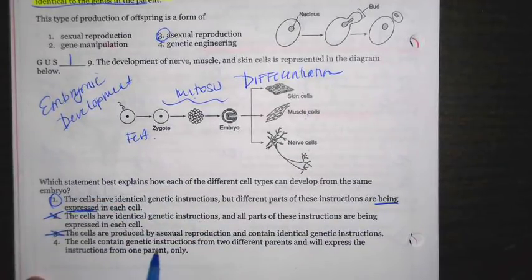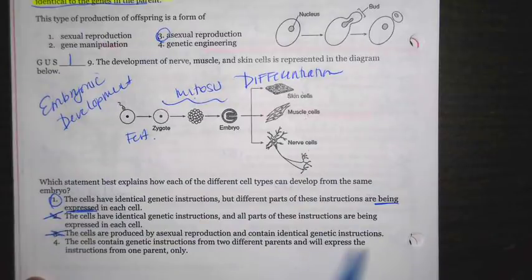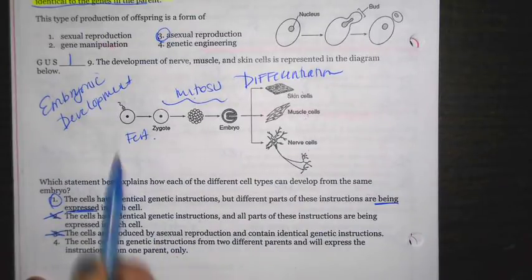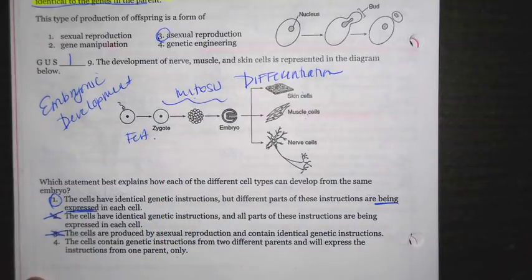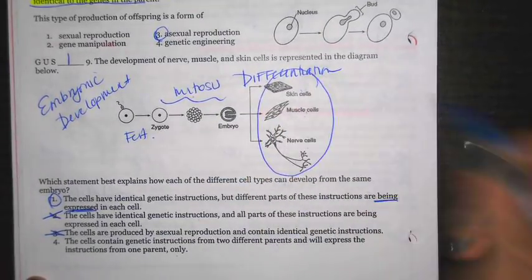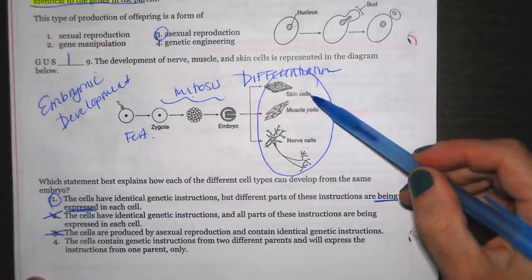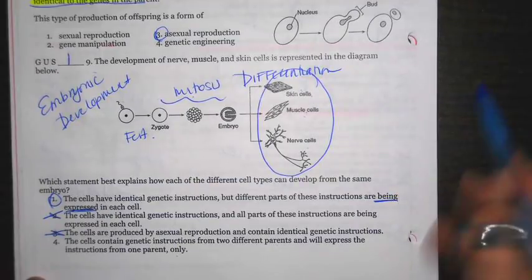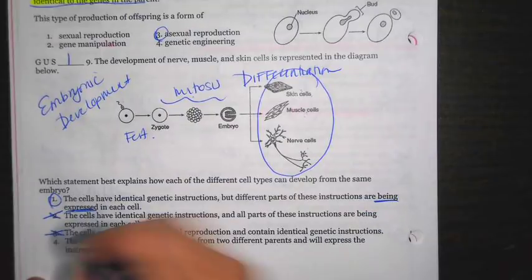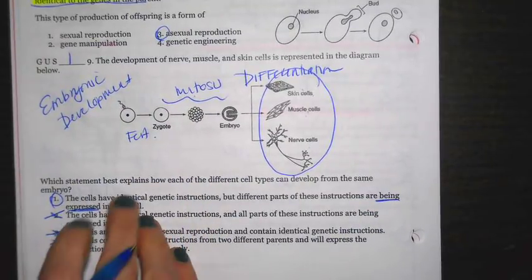The cells contain genetic instructions from two different parents and will express the instructions from only one parent. No, just think about yourself. This is how you were formed. You may look like your mom a little bit. You may look like your dad a little bit. You don't just express the genes from one of your parents. And plus, this is talking about individual cells. Why is a skin cell a skin cell? Why is a muscle cell a muscle cell? This is, again, differentiation. Number one is the best answer choice there.